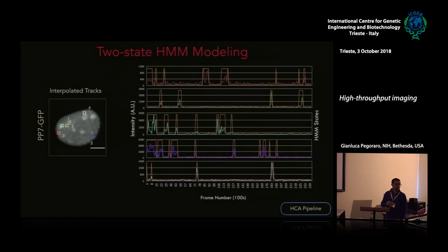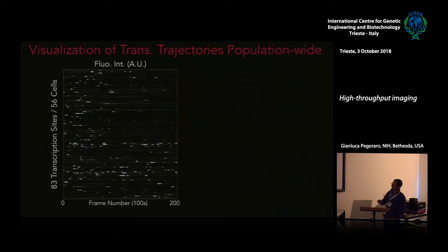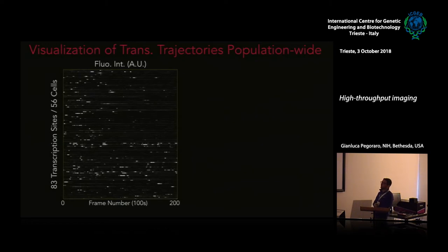These are chronograms — ways to compress all transcription traces for multiple transcription sites. On the y-axis are 83 different transcription sites, on the x-axis is time, and in grayscale is fluorescence intensity. Confirming what was shown before but now with hundreds of cells — transcription is a bursting process, and for this particular reporter it's also a fairly heterogeneous process with no major coordination apparent.